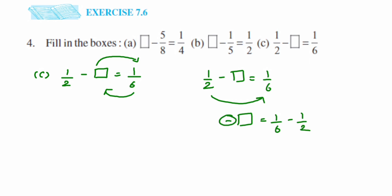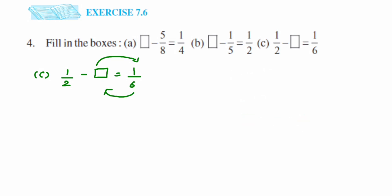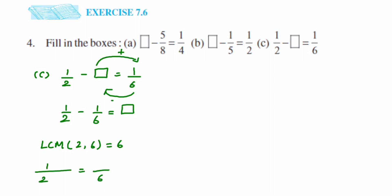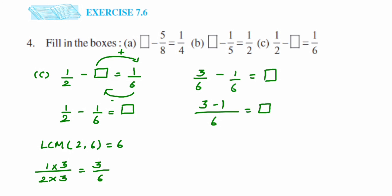So: 1 upon 2, then we bring 1 upon 6 to the left-hand side — plus becomes minus — so we get 1 upon 2 minus 1 upon 6 equals the blank. The blank had a negative sign, so when transposed to the other side it becomes positive. Now the denominators are not the same, so we take the LCM of 2 and 6, which is 6. For 1 upon 2, multiply numerator and denominator by 3 to get 3 upon 6. The second number already has 6 in the denominator.